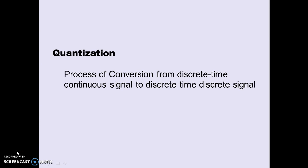Before starting, we will discuss what quantization actually is. This is the process of converting from a discrete-time continuous signal to a discrete-time discrete signal. From the quantum mechanics side, quantization is to discretize some energy levels where electrons will reside and will not reside beyond those energy levels. That concept has been carried forward to digital communication, where all samples are quantized to particular discrete levels.